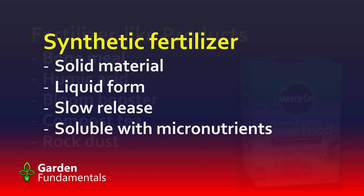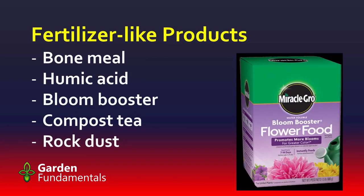Micronutrients are important to plants, but most soil already has plenty. There are other fertilizer-like products, such as bone meal, humic acid, bloom booster, compost tea, and rock dust. Bone meal is basically phosphate with some calcium, and most soil has enough of both. Humic acid is nothing more than ground-up coal. Bloom boosters generally have a very high amount of phosphate, but that phosphate doesn't increase blooms unless your soil is really deficient in phosphate, and that's rarely the case. Compost tea and rock dust do not have much scientific support.